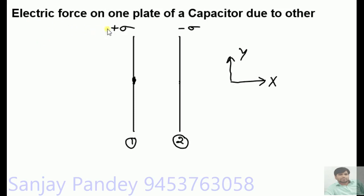We will find the electric force on one plate of a capacitor due to the other. Here we have a parallel plate capacitor. Plate 1 has charge density plus sigma and plate 2 has charge density minus sigma.